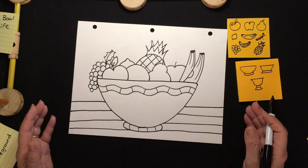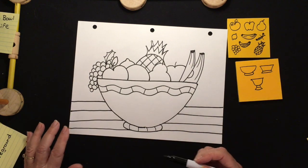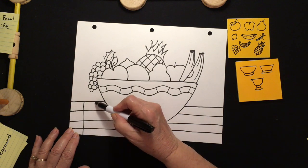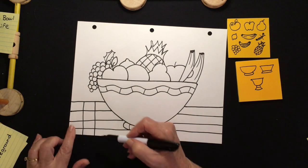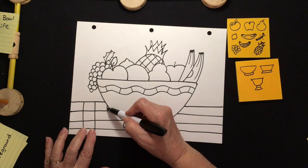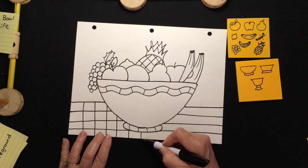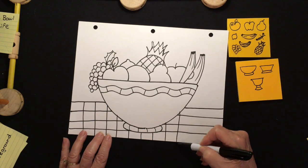So now I'm going to make some lines going down. And notice I'm trying to make them the same thickness all the way across. There we go.